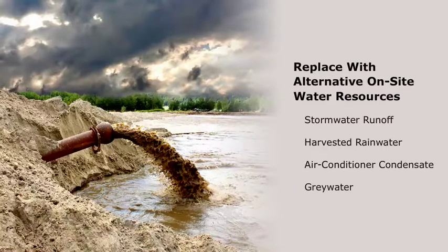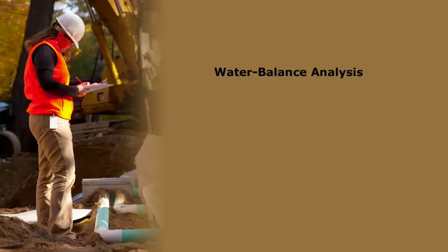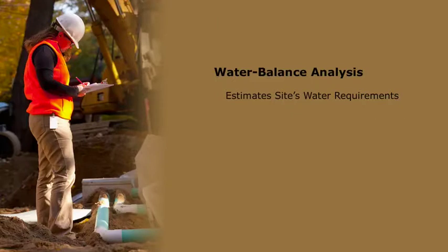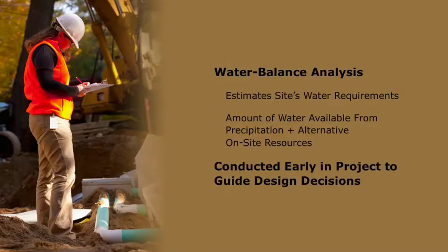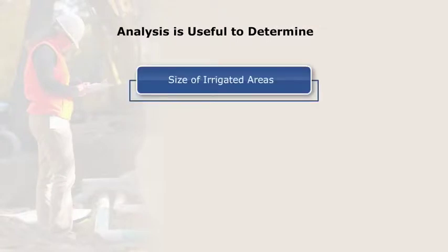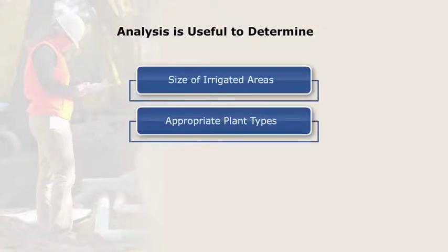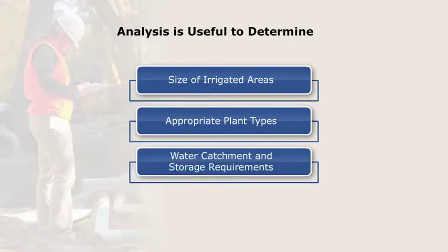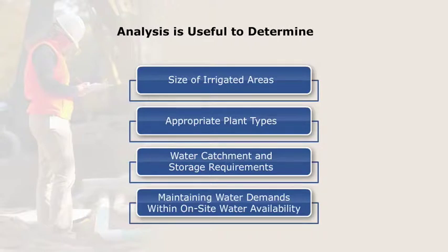A water balance analysis or water budget that estimates a site's water requirements, as well as the amount of water available from precipitation and alternative on-site resources, should be conducted early in the project and used to guide design decisions. Such an analysis is useful when determining the size of irrigated areas, appropriate plant types, and water catchment and storage requirements, and is critical for ultimately maintaining water demands within the on-site water availability.